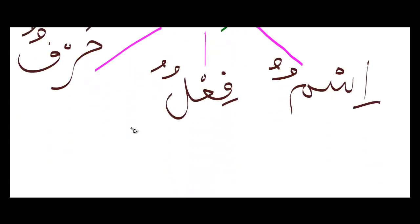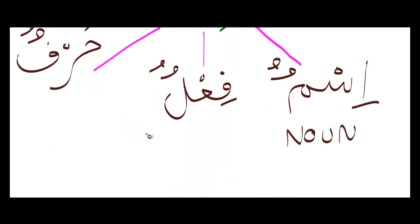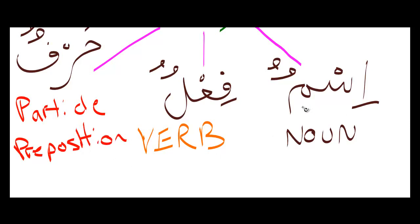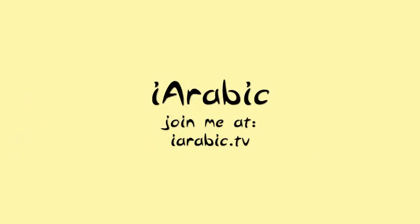In English, ism is known as a noun, fi'l is known as a verb, and harf is known as a particle or preposition. In our next video, we'll be going into the different qualities of ism, fi'l, and harf. So thank you all for watching.